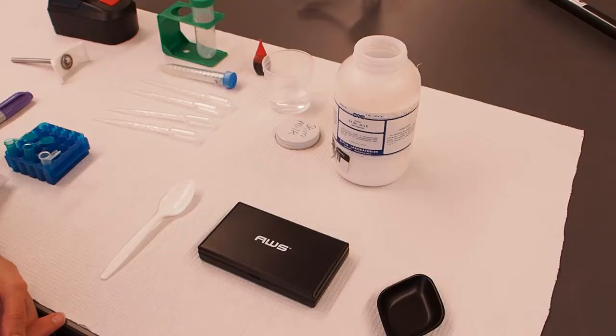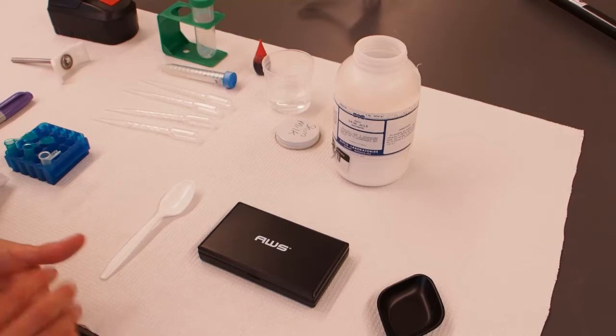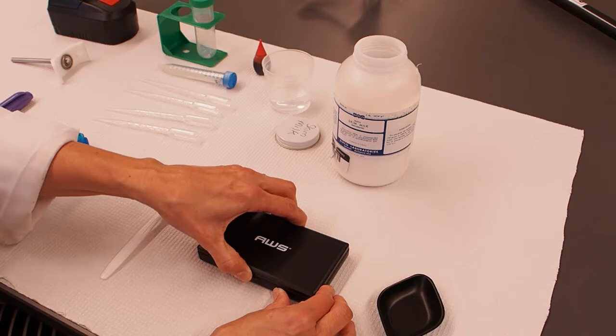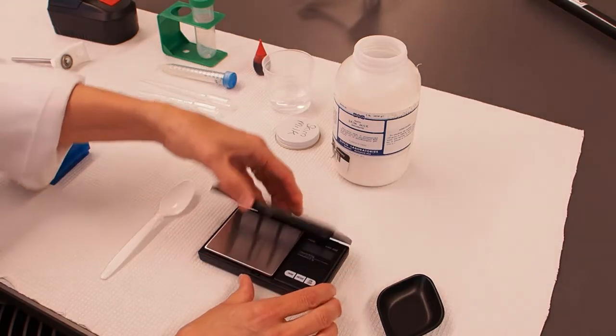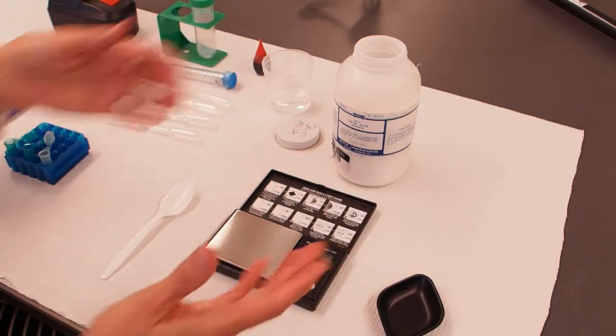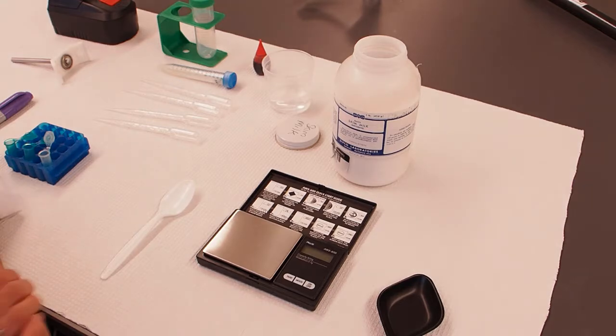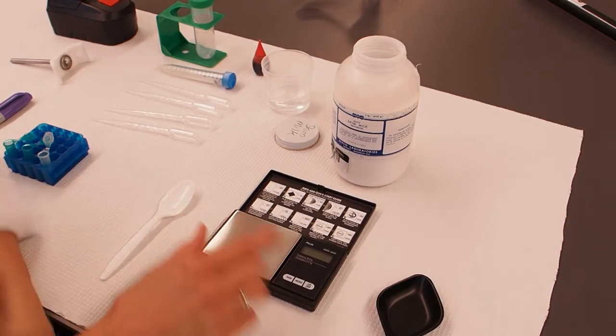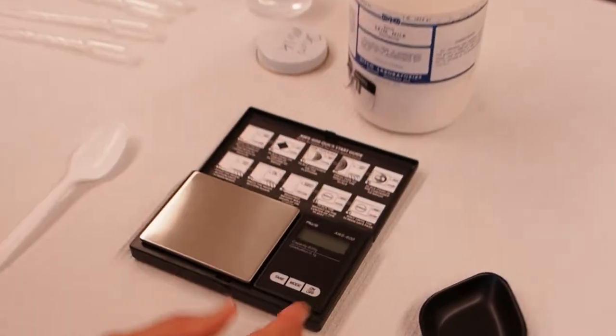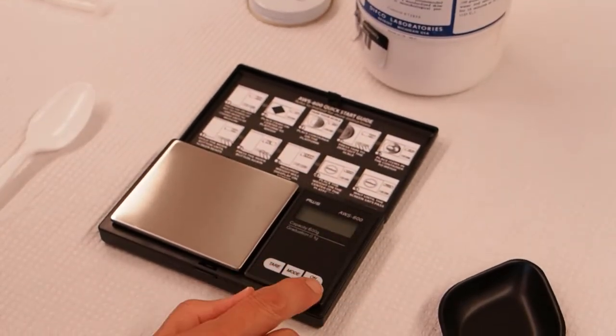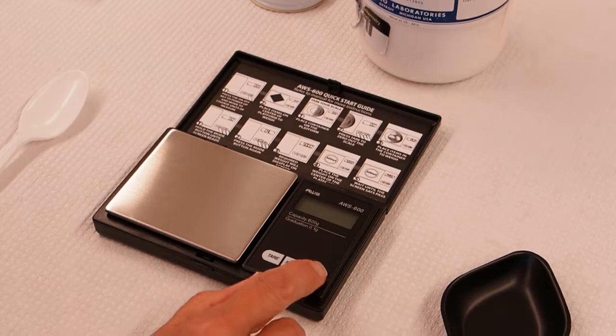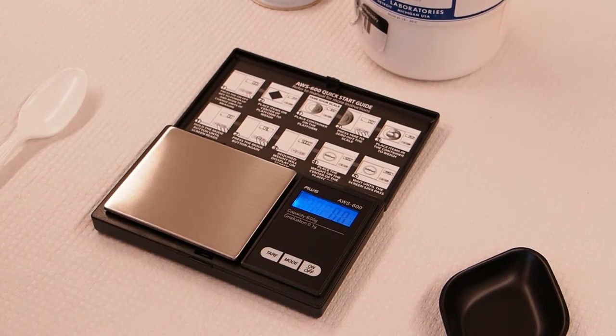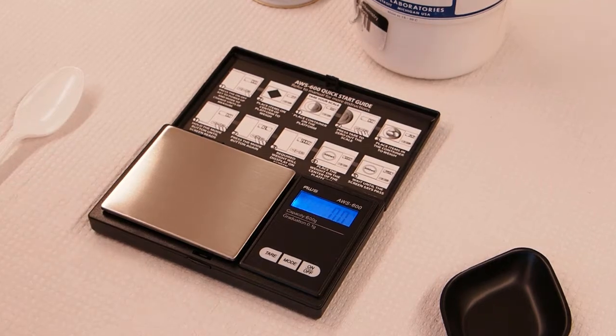First I'm going to show you how to use your scale, and you may hear us call it a balance. Scientists tend to call their scales balances because old fashioned scales used to have two pans that would balance when you were weighing things that were equal. If you open the cover of your balance, you'll see there's a display and some buttons for controls. You're going to hold the on off button to turn it on and wait till it reads a mass.